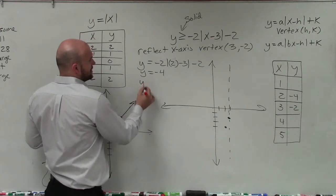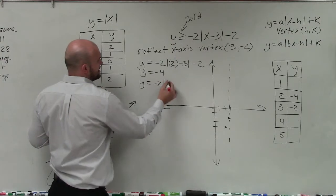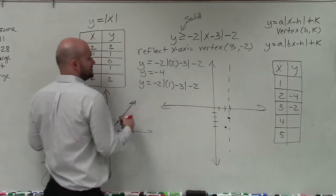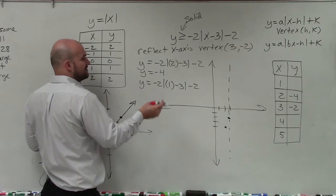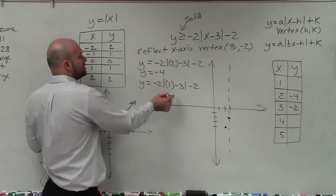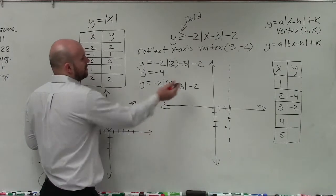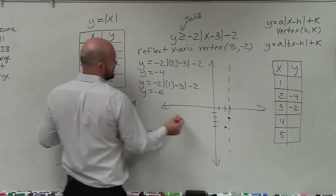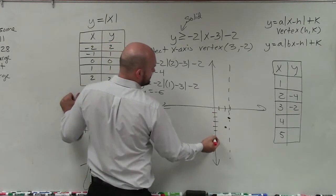Then the next one is, let's do 1. y equals negative 2 times absolute value of 1 minus 3 minus 2. Now, again, let's do it again. 1 minus 3 is negative 2. Absolute value of negative 2 is positive 2. 2 times negative 2 is negative 4. Negative 4 minus 2 is negative 6. So at 1, I'm going to go down to negative 6.